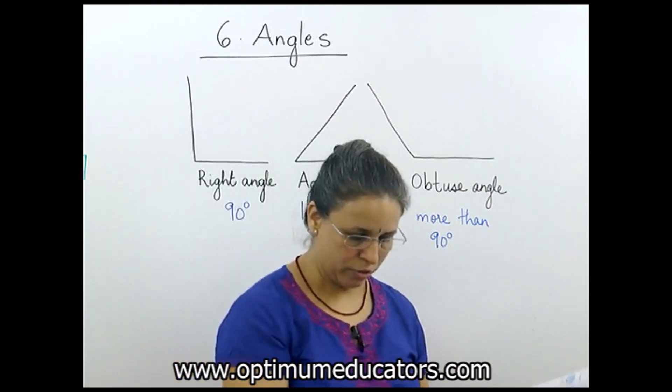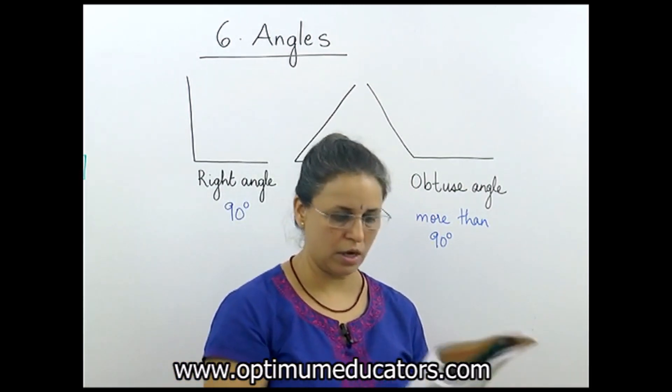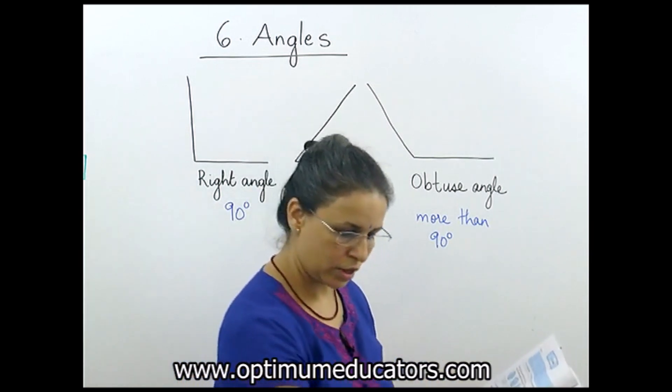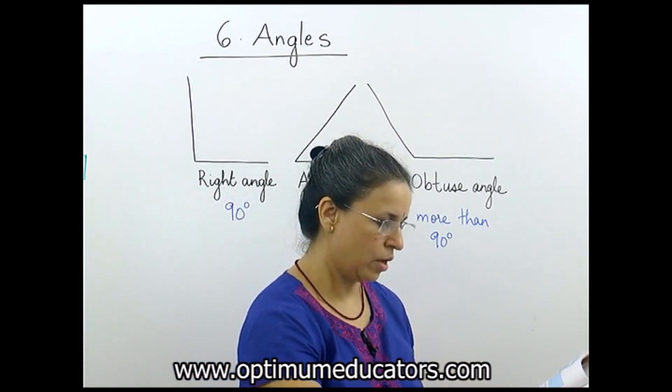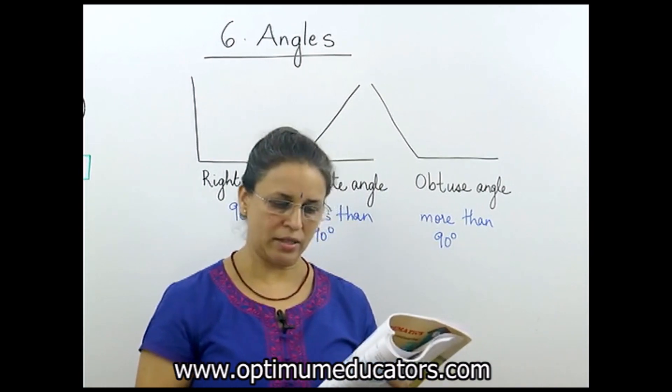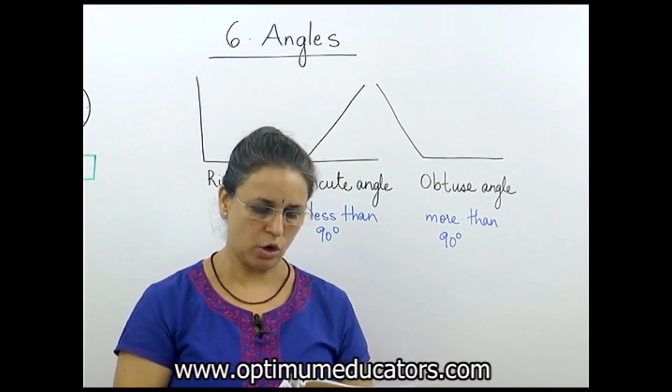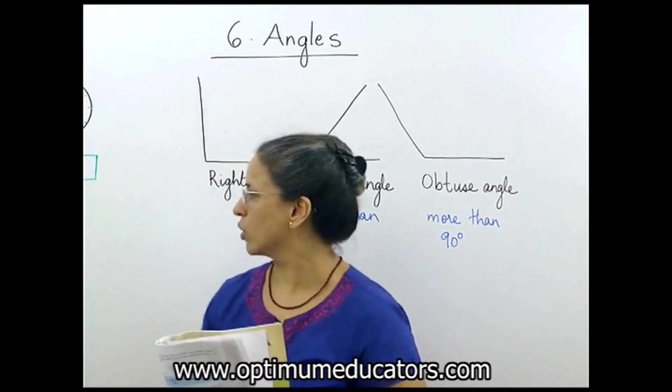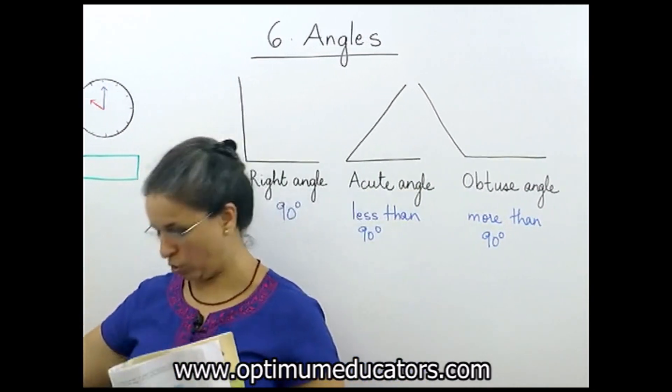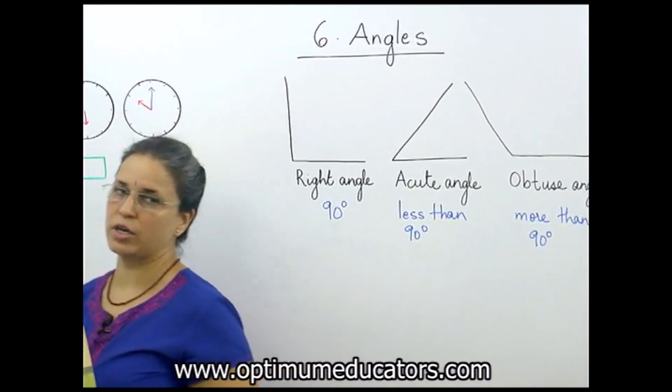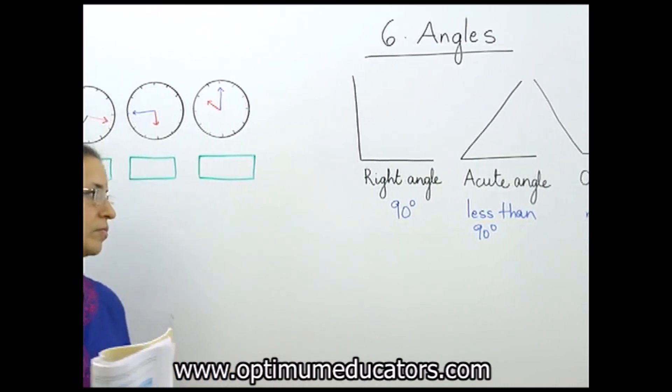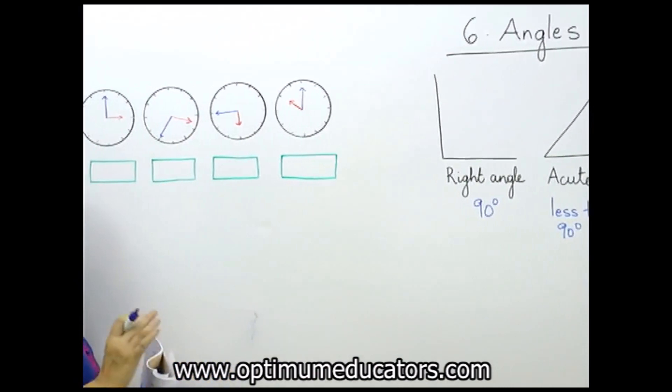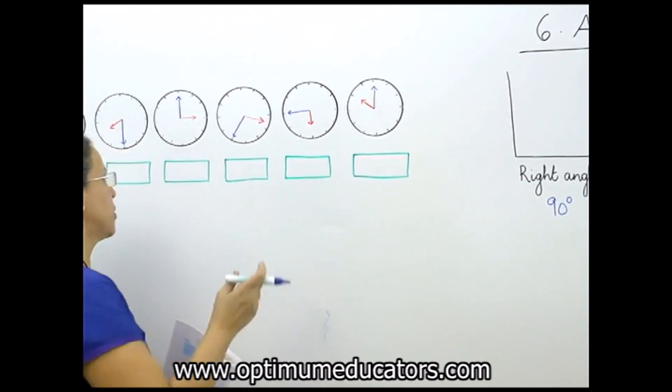Now we have different clocks given in our book. Can you see the different clocks? Write whether the hands make a right angle, acute angle, or obtuse angle. So now we come here and look at all the clocks that we have in our book. We don't have to tell the time, of course, but purposely I